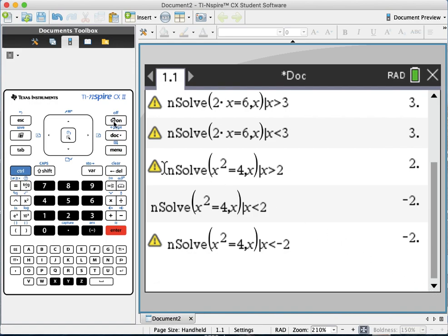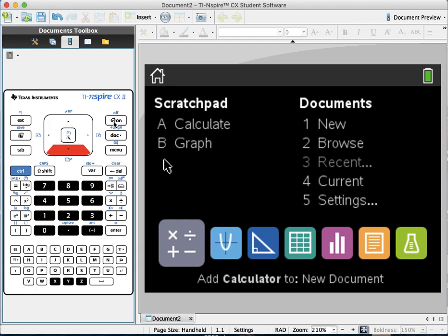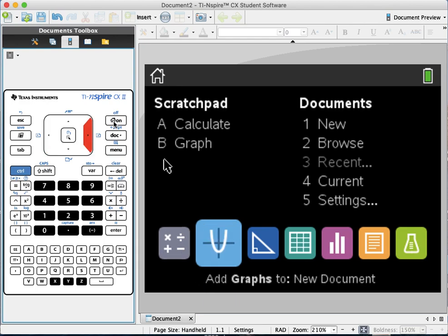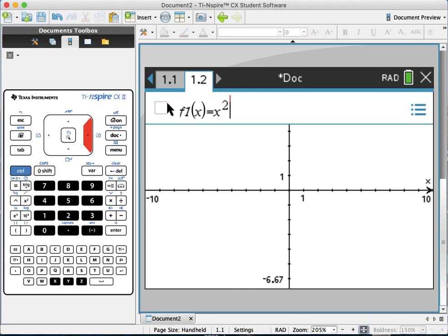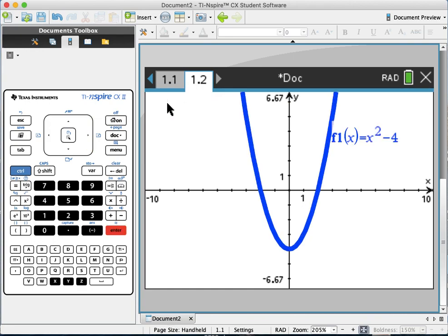Remember we used the graphing app in the previous lesson. So I add a graph to my document, and if I type x squared minus 4, I see that I have only two solutions.